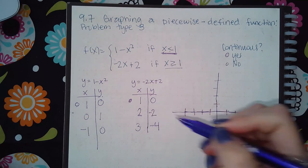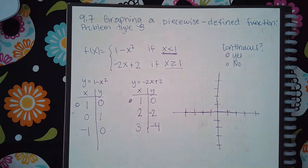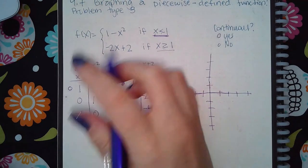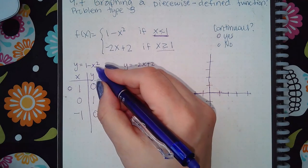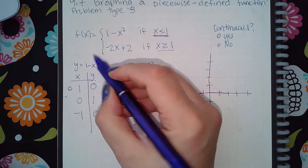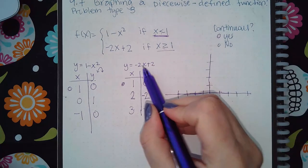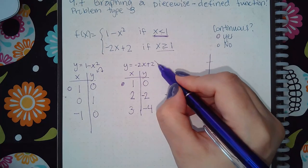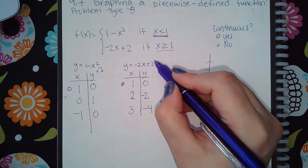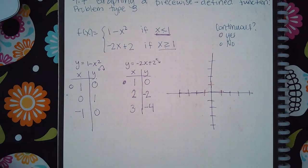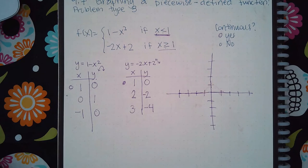I think the values are negative 2 and negative 4. When graphing, remember the first expression is squared so it will look like a curve — specifically a downward curve because it's a negative square. The second expression is a line with a negative slope, so it should be going downward in that direction.